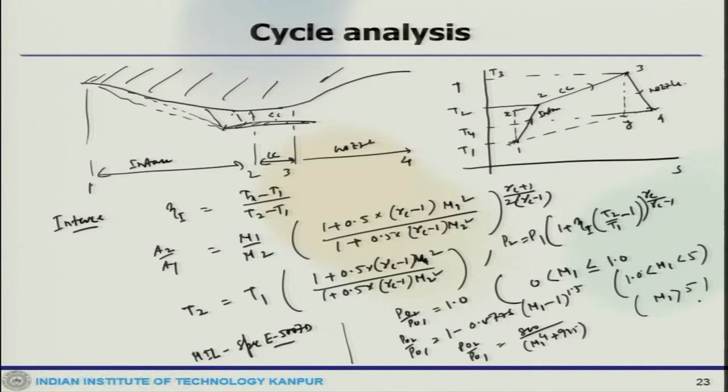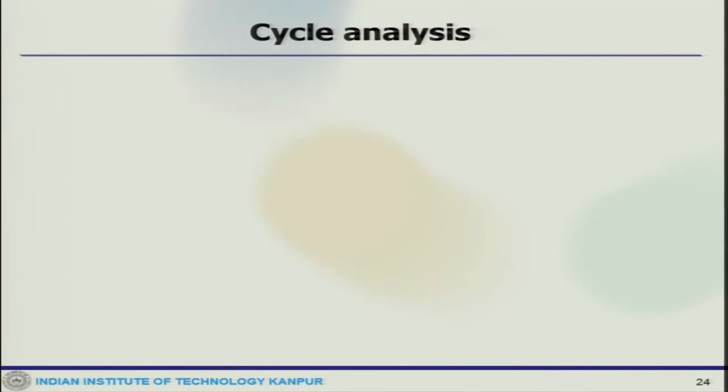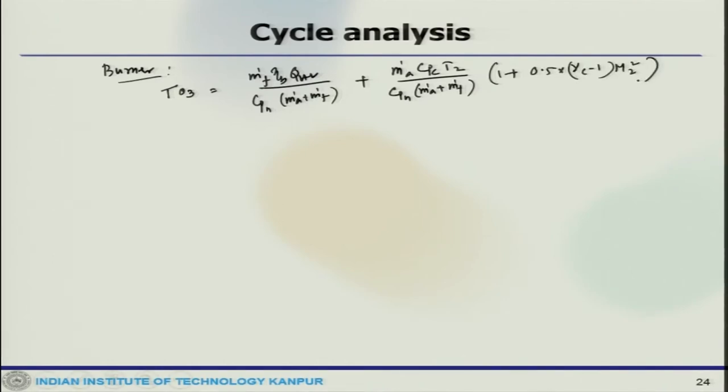Then we go to the burner and once we go to the burner, then we again do the analysis. What we get is T03 equals to M_dot times Eta_B times Q_HB by Cp_H times M_dot_A plus F times M_dot_A times Cp_C times T2 by Cp_H times M_dot_A plus M_dot_F, divided by 1 plus 0.5 into gamma_C minus 1 M2 square.